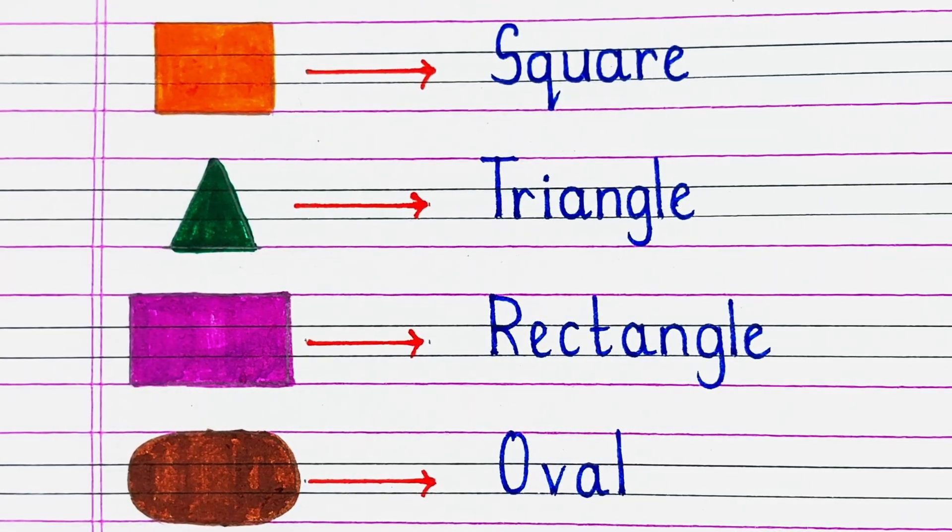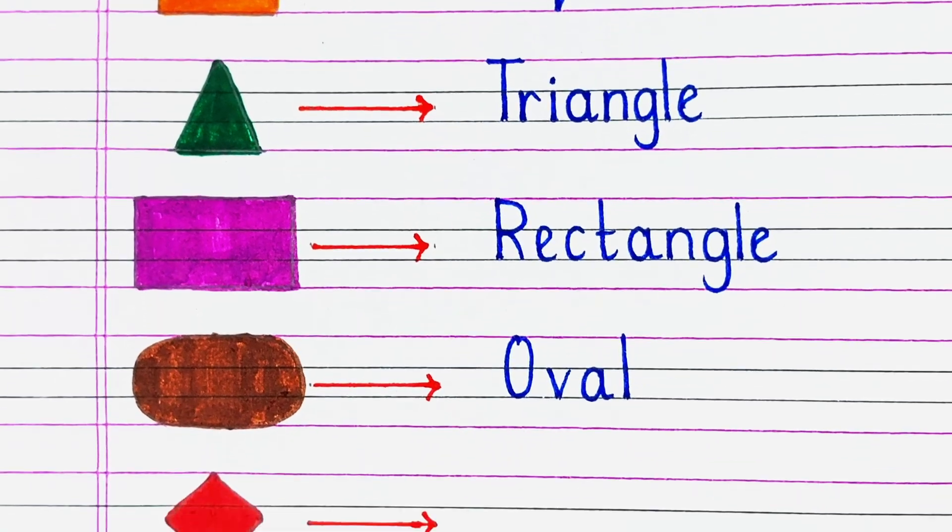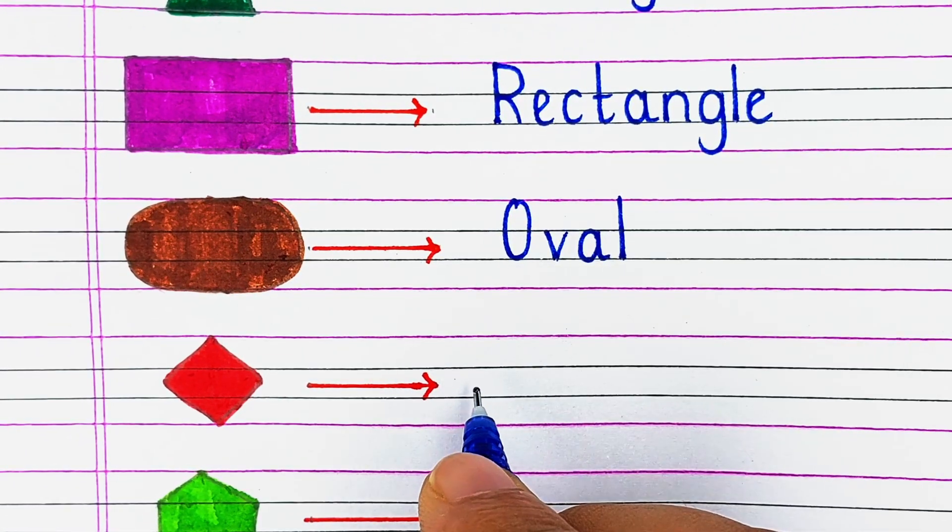Next shape is like a shape of an egg. It is called oval shape.